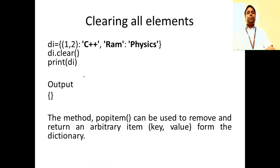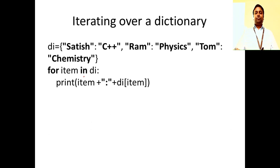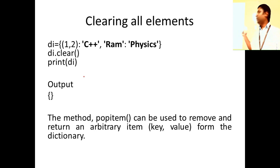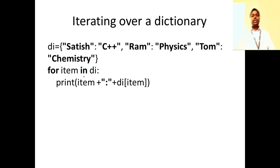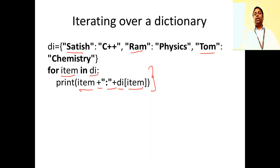We've seen examples for clearing all elements and popping an element. A dictionary is an unordered set — it doesn't have indexing, so you can't use indexing for dictionaries. It only uses the key to traverse and get the value. When you pop an item, it will pop any arbitrary key-value pair. When iterating, 'for item in dictionary_name' goes through every key, and di[key] prints the value for each key.